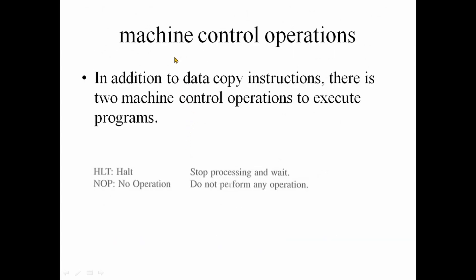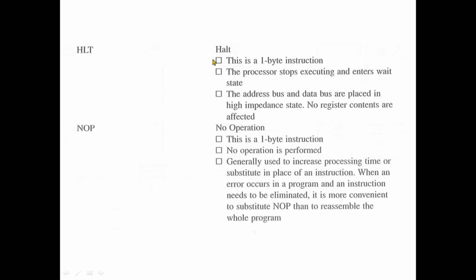The next set of operations is the machine control operations. There is a HALT instruction. HALT is a 1-byte instruction. The HALT instruction stops executing and enters a wait state. The execution is stopped and the processor waits. The address bus and the data bus are in a high-impedance state.